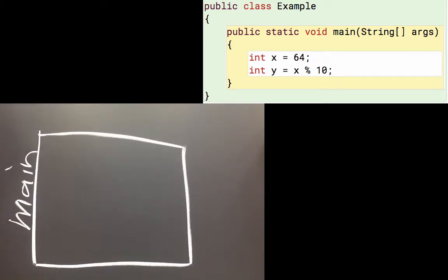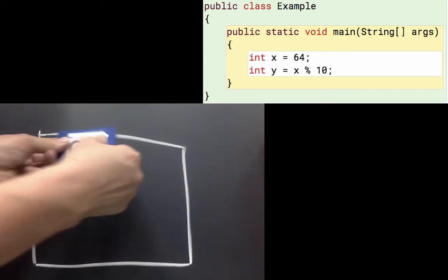So inside of the main method, the first line says int x gets the value of 64. So the variable x gets the value of 64.